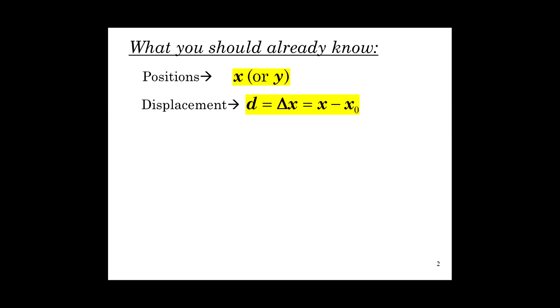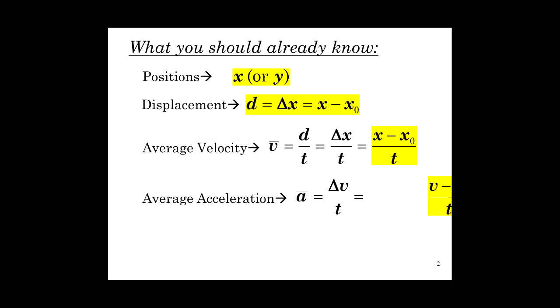Okay, so first of all, a whirlwind discussion of things you already know or should know or hopefully you know. Positions, symbols x or y, displacement d, which is delta x, which is also final minus initial position. Average velocity, displacement over time, which is delta x over t, x minus x0 over t. And average acceleration, change in velocity over time, v minus v0 over t.